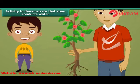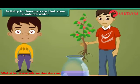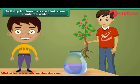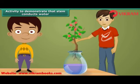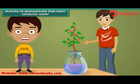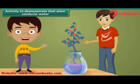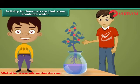Let us perform an activity to demonstrate that the stem conducts water. Take a balsam plant with roots and put it in a pot containing colored liquid. After a while, you will observe the same color in the stem, leaves, etc. of the plant. This proves that the stem conducts water from the roots to the other parts of the plant body.